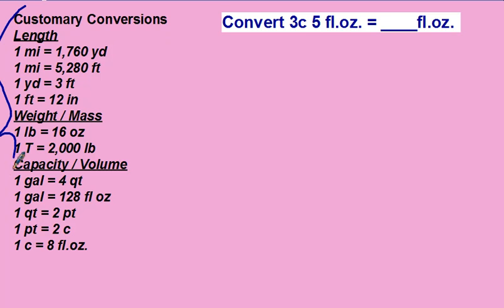Sometimes you just have a chart, and you can look them up. These are better to memorize. Let's say we're doing 3 cups with 5 fluid ounces, and we're changing into all the fluid ounces. In this case, we're going from cups, which are bigger, to fluid ounces, which are smaller.